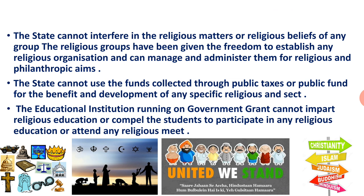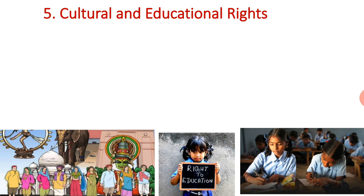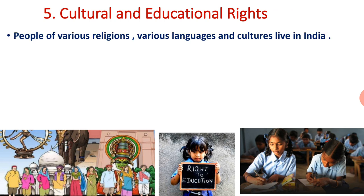Number five: Cultural and Educational Rights. Various religious people live in India. Culture includes language, food, lifestyle, clothes, and festivals — these are all part of culture and religion. All citizens of India have the right to choose their religion as per their choice and follow their culture. They can preserve their cultures. People of various religions, languages, and cultures live in India.